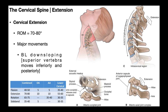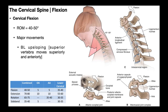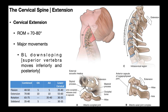At the atlanto-axial joint, the pivot and the extension movement occur in the same direction. The posterior tubercle of the atlas and the spinous process of the axis are going to approximate — come closer together. As the atlas bends backwards relative to the axis in extension, we see the atlas pivot posteriorly relative to the axis. As we pivot the atlas posteriorly relative to the axis, that also puts tension on the anterior joint capsule of the atlanto-axial joint.